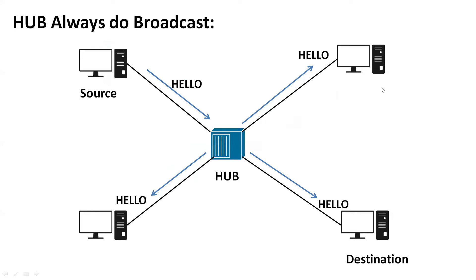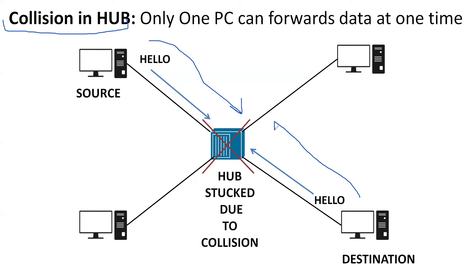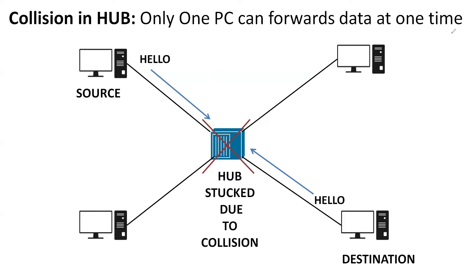This is the big issue — every single person in the network will get the same message every time. Regarding collisions: if two devices are forwarding data at the same time, the hub will be stuck and no data will flow.